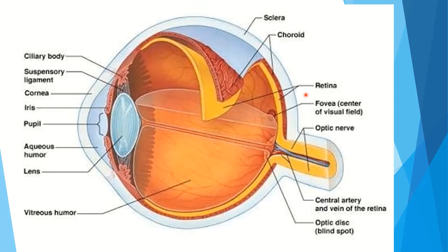This is the aqueous humor — a transparent, watery liquid. It fills the space between the lens and the cornea. And this is the transparent, biconvex lens that has the ability to change its curvature. It focuses images on the retina.